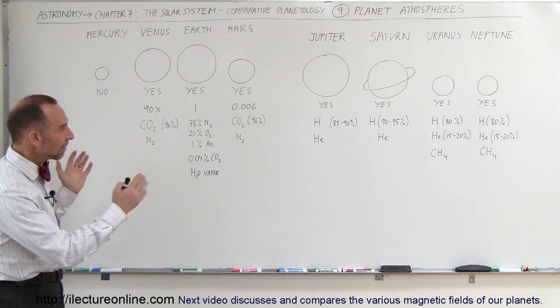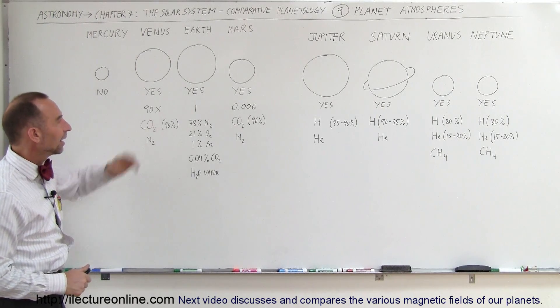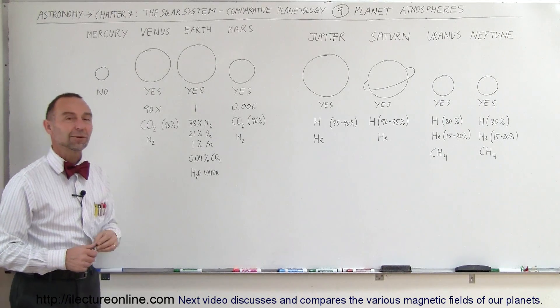Well, there you go. There you have a pretty good overview of the atmospheres of the eight planets. Of course, Mercury has none, and then the other seven have an interesting composition of the atmosphere. And that's what it looks like.